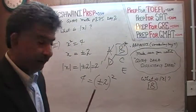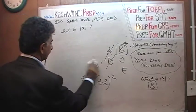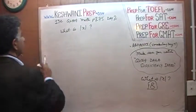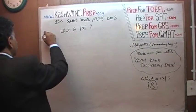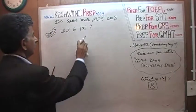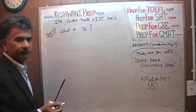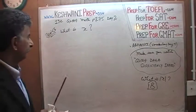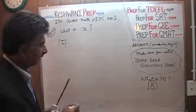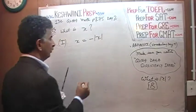Let's have a new question — a bonus question. This is not question number one; this is a bonus. The question is: what is X? It's a new question, not in the book. The first statement given to us is X equals negative of the absolute value of X.